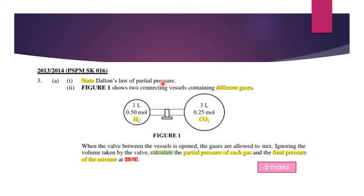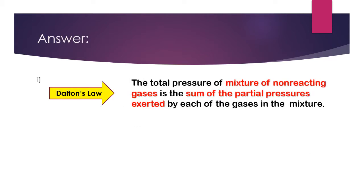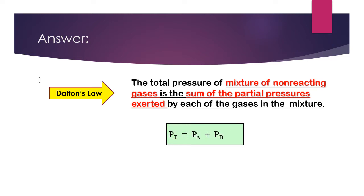So let's look at the answer to this question. Dalton's Law states that the total pressure of a mixture of non-reacting gases is the sum of the partial pressures exerted by each of the gases in the mixture. It can be represented by the equation below.